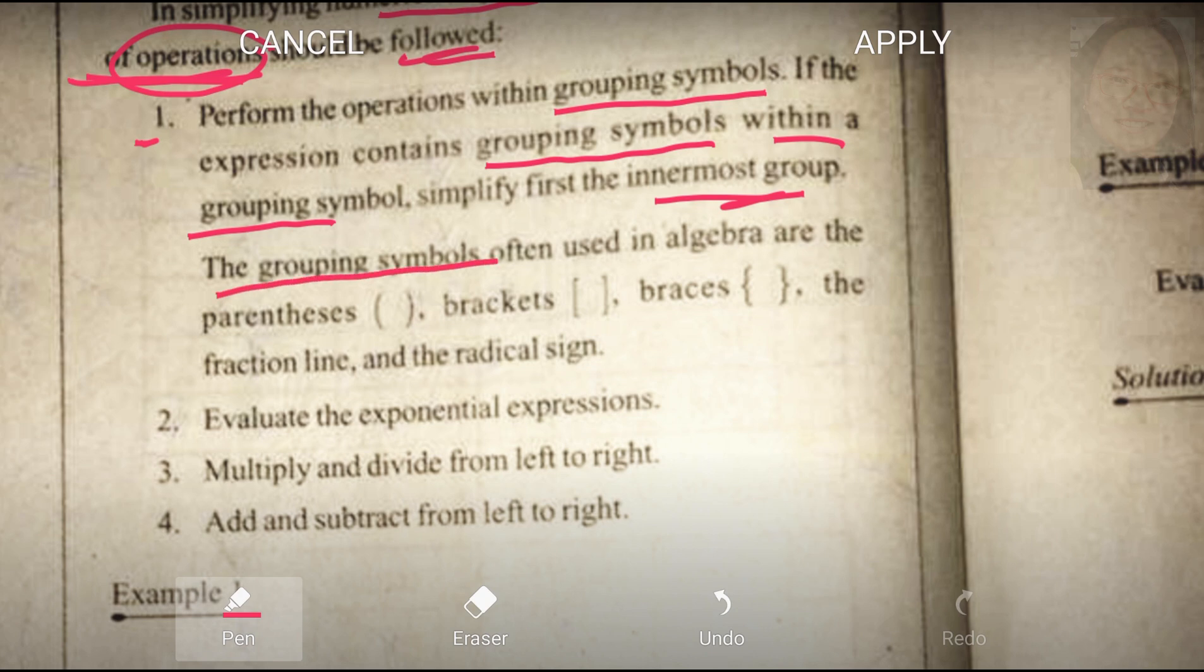the grouping symbols often used in algebra are the Parenthesis, brackets, braces, the fraction line. Ulitin ko, the grouping symbols often used in algebra are the Parenthesis, brackets, braces, the fraction line, and the radical sign.